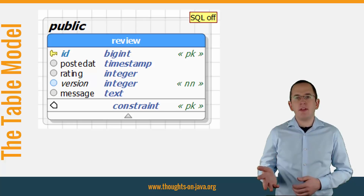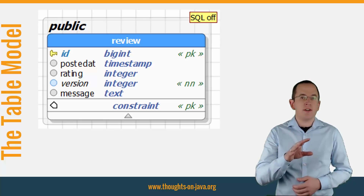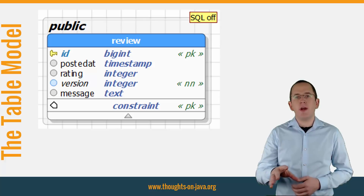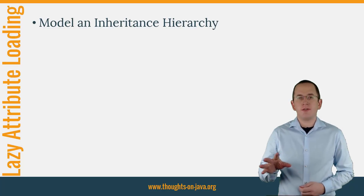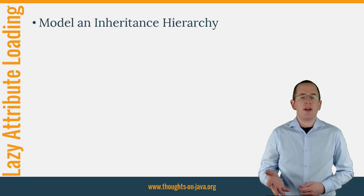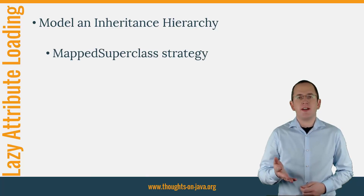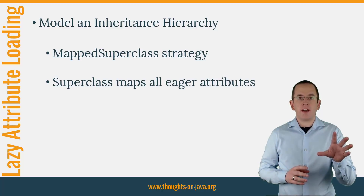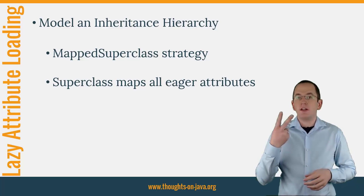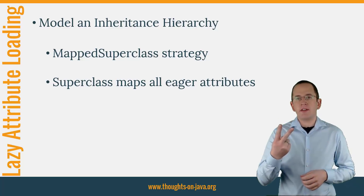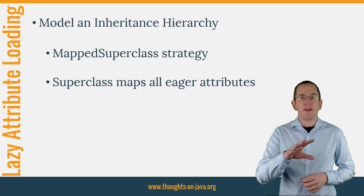So how can you map this table in a way that it supports lazy loading of the message column in a portable way? A good and easy way to implement lazy loading of non-relational attributes is to model an inheritance hierarchy using the mapped superclass strategy. You just need to create a superclass that models all attributes you want to fetch eagerly and two subclasses that map the same database table.